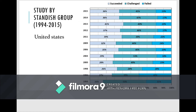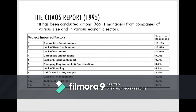By 2015, the success rate improved, the challenging part decreased, and failure decreased compared to 1994. People are increasingly trying to fulfill the four objectives. The Chaos Report of 1995, created by 365 IT managers, found that the biggest reason for project failure is incomplete requirements at 13.1%, followed by lack of user involvement at 12.4%, and lack of resources at 10.6%.